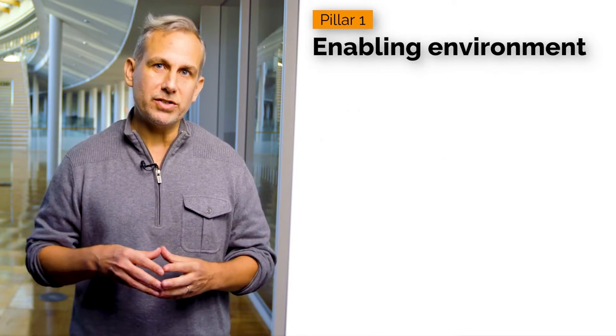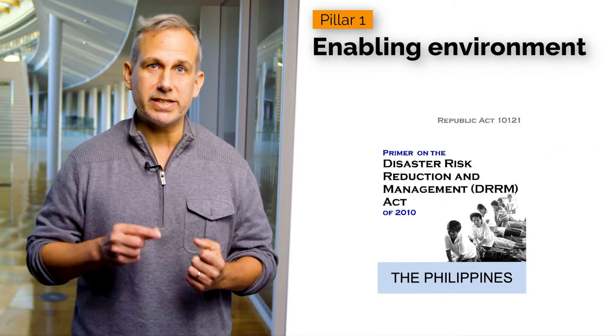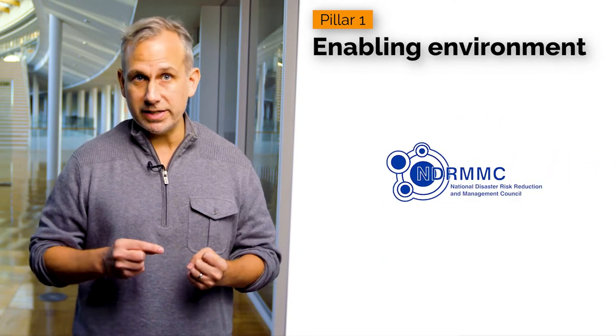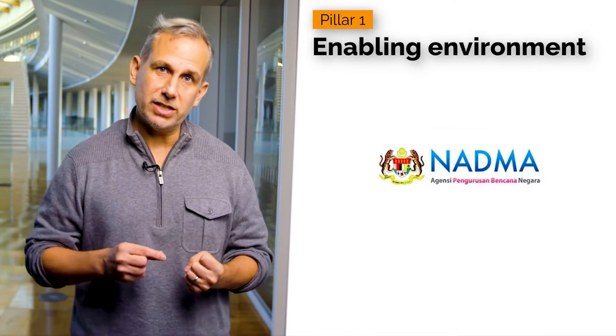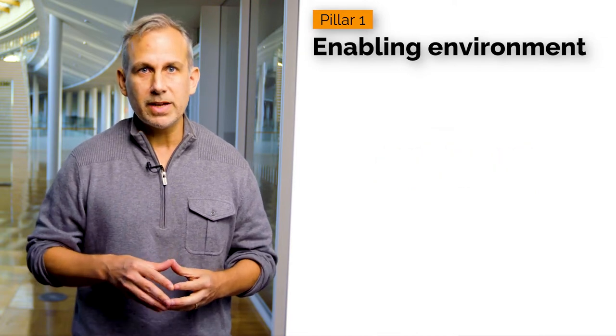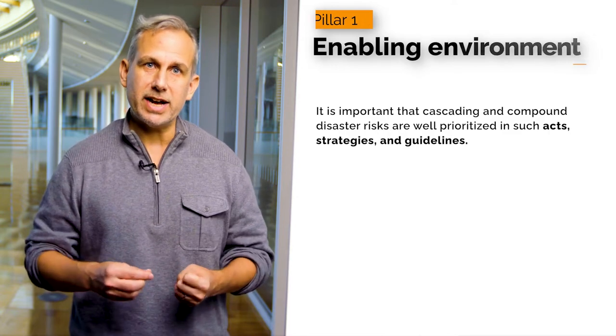Most countries in the Asia Pacific usually have National Disaster Management Acts or National Disaster Management Authorities that provide guidelines and support to different aspects of disaster risk reduction at sub-national and local levels. It is important that cascading and compound disaster risks are well prioritized in such acts, strategies, and guidelines. A review of existing policy and legal arrangements can help identify key gaps and accordingly revise, update, or newly formulate acts, policies, and strategies to address cascading and compound disaster risk assessment and management.